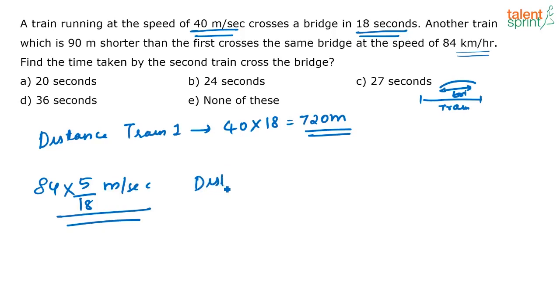Now what will be the distance that is traveled by the second train? It is given here in the question very clearly that train 2 is 90 meters shorter than the first train, and it is also crossing the same bridge. So the total distance that will be traveled by the second train will be nothing but 720 minus 90, or it is equal to 630.